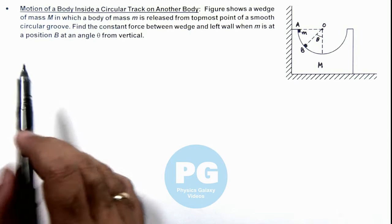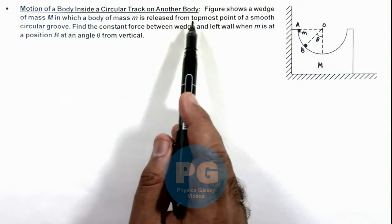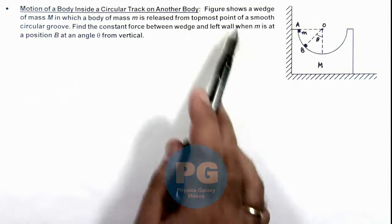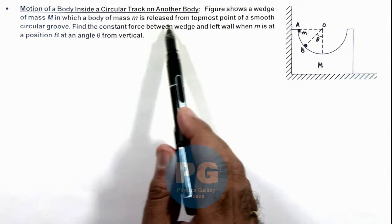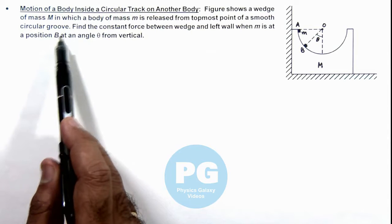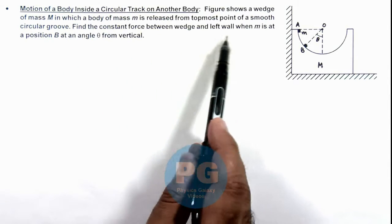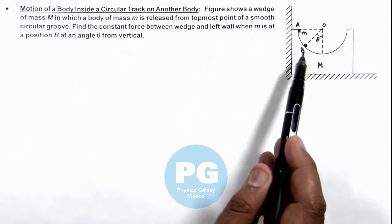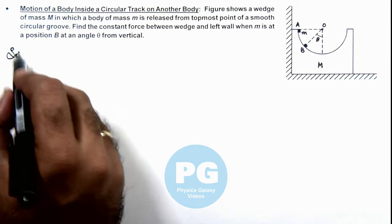In this illustration we'll discuss the motion of a body inside a circular track on another body. The figure shows a wedge of mass M in which a body of mass m is released from topmost point of a smooth circular groove. We are required to find the contact force between wedge and left wall when m is at position B at an angle theta from the vertical.